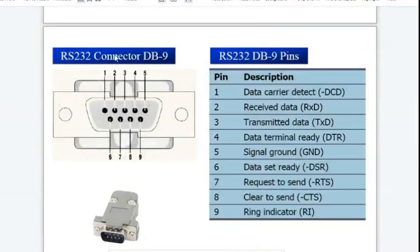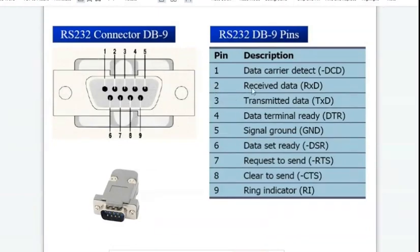The figure shows RS-232 connector, DB9. You can see here there are nine pins. Pin number two is received data, RXD, and pin number three is transmitted data, TXD.